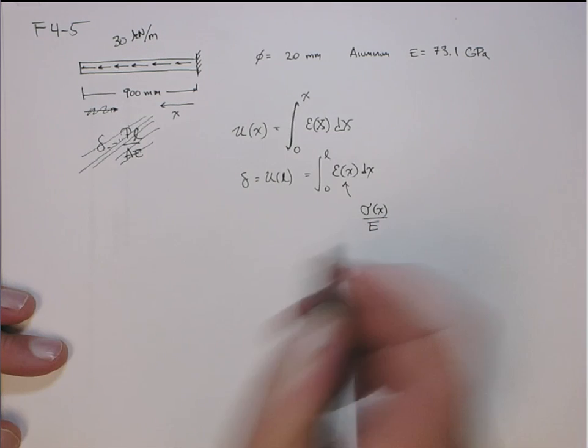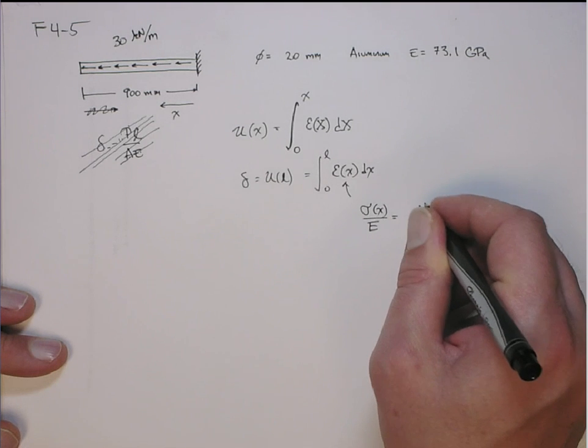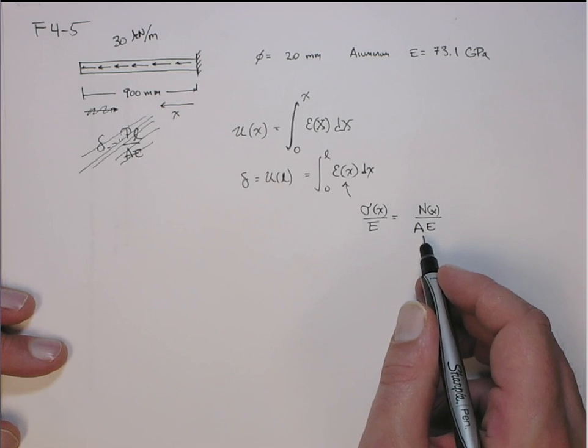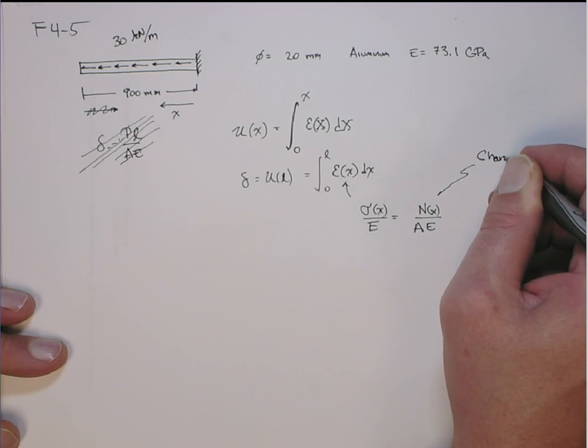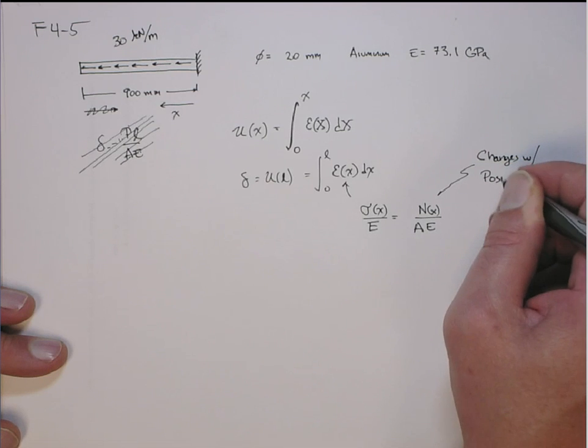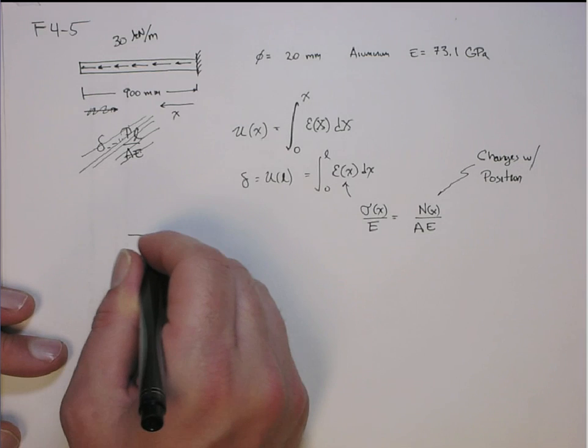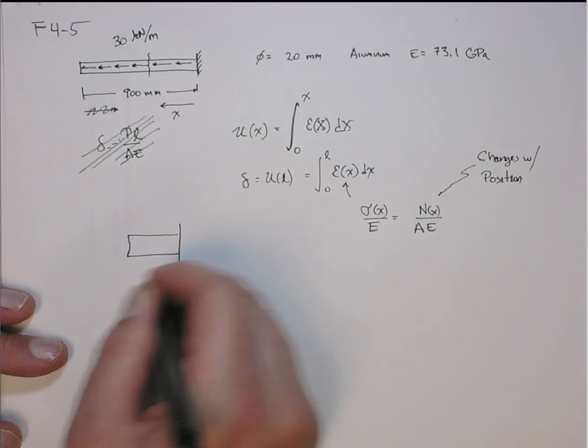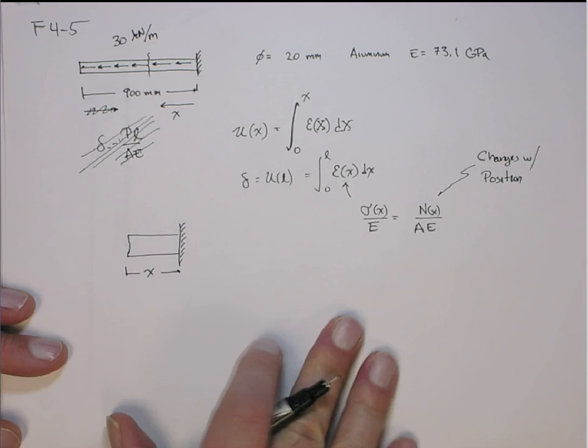So what's the free body diagram? The strain is the stress over Young's modulus. Young's modulus is constant. And then we can define the stress as the internal reaction force over the cross-sectional area, which is also constant. So A is constant in this problem. But this is what varies. That's what changes with position. That's why we have to do the integral. So we need to get that. How do we figure that out?